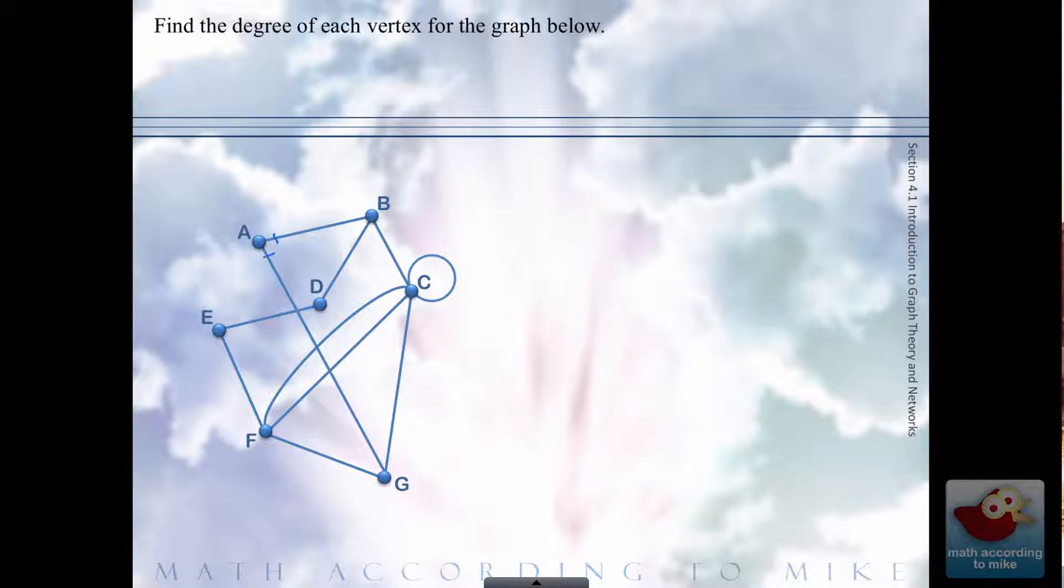I hope you paused the video. Okay, let's see how you did. So vertex a: one, two, degree two. B: one, two, three, degree three. C: be careful, one, two, three, four, five, six. Remember, a loop counts as two, so degree six.